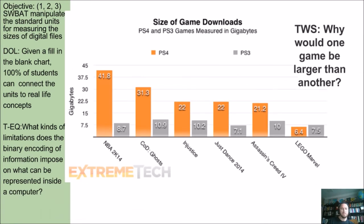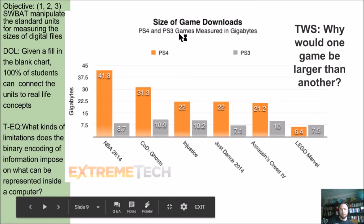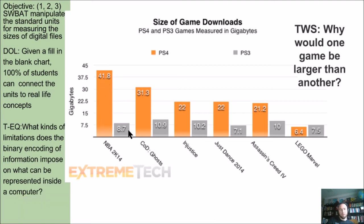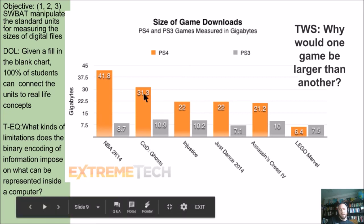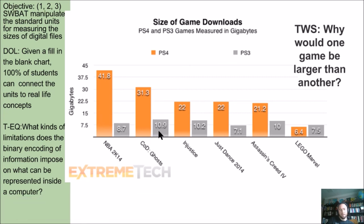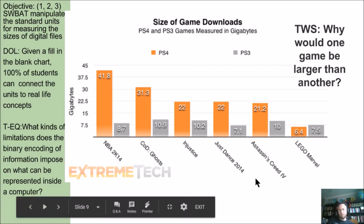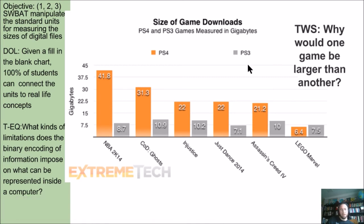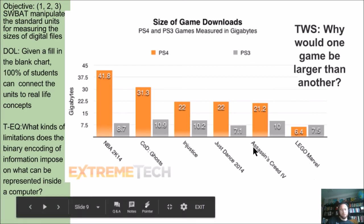Here's a look at the size of game downloads — PS4 and PS3 games measured in gigabytes. NBA 2K is going to be 41 gigs on PS4, which is pretty big, while it's smaller on PS3. Call of Duty Ghosts is 31 gigs on PS4 and 10 gigs on PS3. Think, write, share: Why would one game be larger than the other? Why is Lego Marvel so small, and yet NBA 2K is huge?